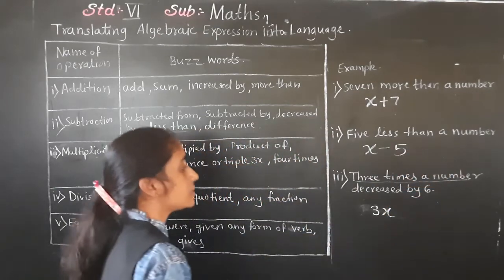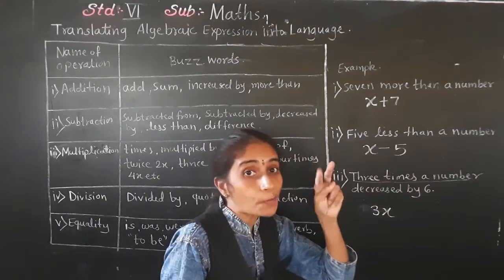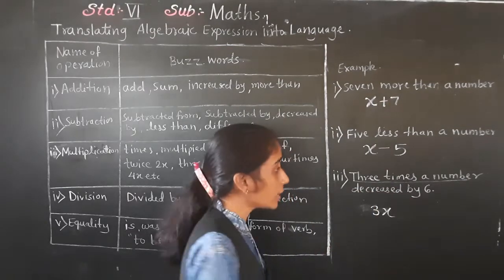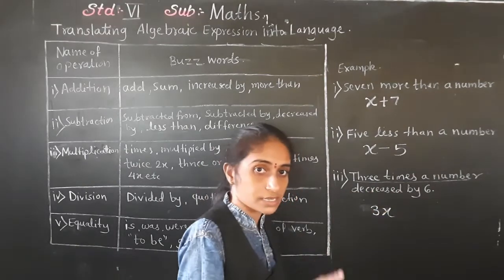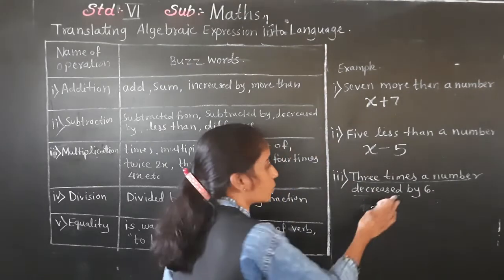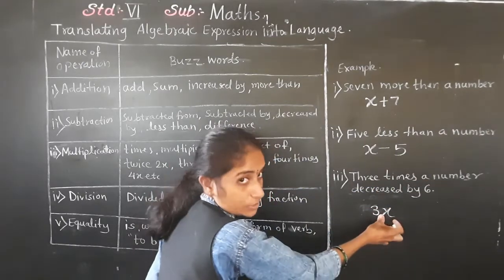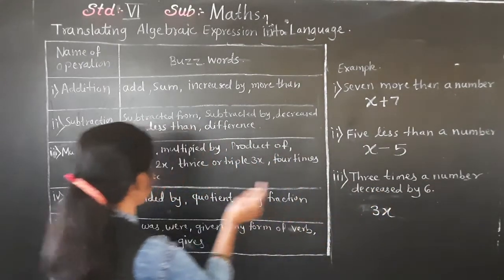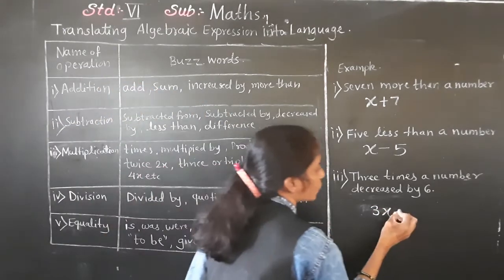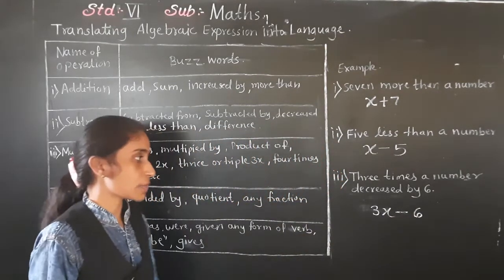Three times a number decreased by six. Here, two operations are given: 'three times' means multiplication, and 'decrease by' means subtraction. First, three times a number gives 3x. Then decrease by six means subtract six: so the answer is 3x minus 6.